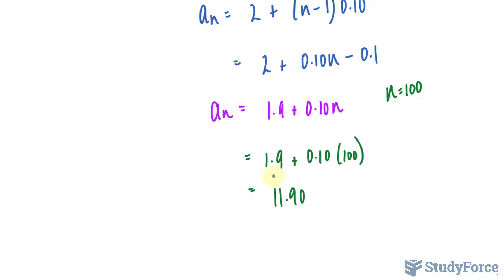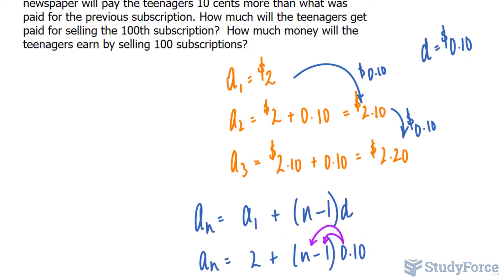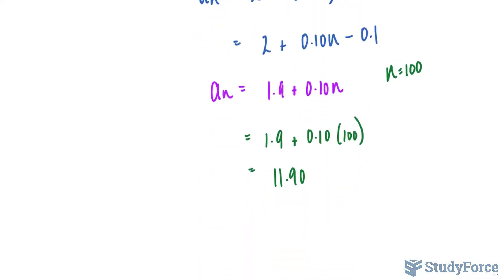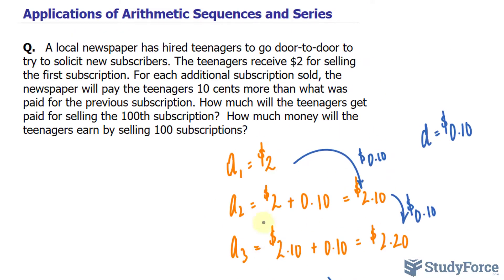Now this is not the sum of all he made. For that, you have to add up everything from what happened at the very beginning, which was $2 plus 2.10 plus 2.20 and so on, all the way to this number. To find that out, rather than having to create a table of all the amounts that he made from 0 to 100, we can use another formula.